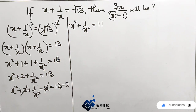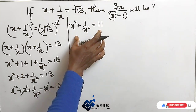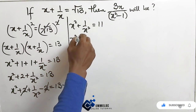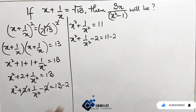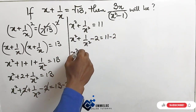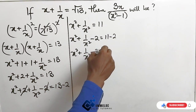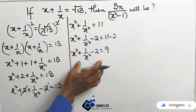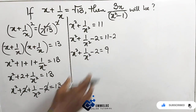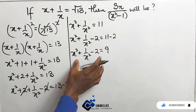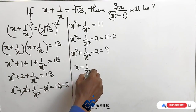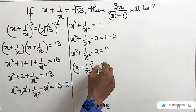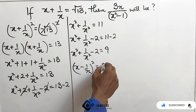Now applying logic here also, let us subtract 2 from both sides again: x squared plus 1 over x squared minus 2 equals 11 minus 2. So here we have x squared plus 1 over x squared minus 2 equals 9. Now if you take a look at the left-hand side, you will see this is a perfect square. If we resolve it, it becomes x minus 1 over x, all to the power of 2, equals 9.